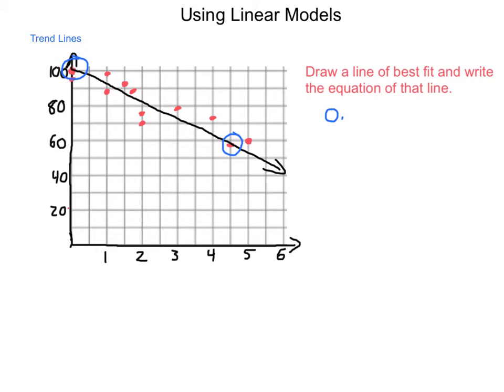So going back to our data sets, those points were 0, 100, and 4.5, 57.